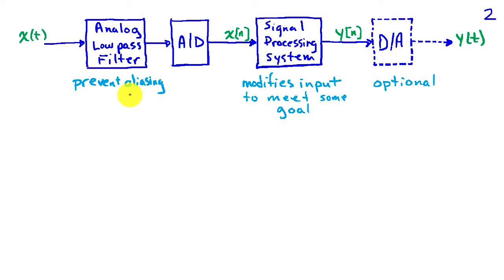Anytime you sample signals you have the potential for aliasing. Typically an analog low-pass filter is used to prevent aliasing, and that limits the highest frequency that's presented to the A to D when the signal is sampled. So this is an analog system constructed from analog components like op amps, capacitors, resistors, and so on.